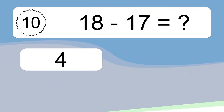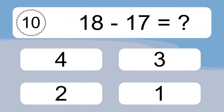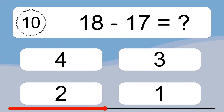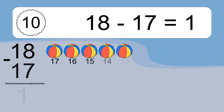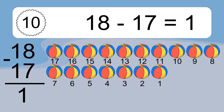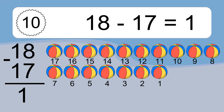18 minus 17 equals what? 18 minus 17 equals 1. Let's count it: 17, 16, 15, 14, 13, 12, 11, 10, 9, 8, 7, 6, 5, 4, 3, 2, 1.